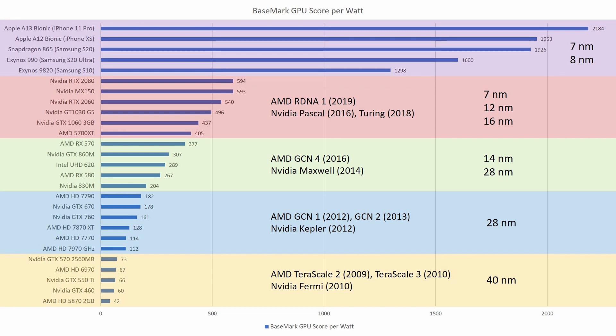And now we come to the smartphone SoCs, where the difference in performance per watt compared to PC GPUs is staggering. With all mobile SoCs delivering between double to nearly quadruple the performance per watt compared to the best PC GPU in this test, the Turing RTX 2080. Starting with the Exynos 9820 at around 1300 points, the Exynos 990 at 1600 points, then the Snapdragon 865 which just about tied with Apple's A12 at just under 2000 points, and then at the top the Apple A13 Bionic at 2184 points.